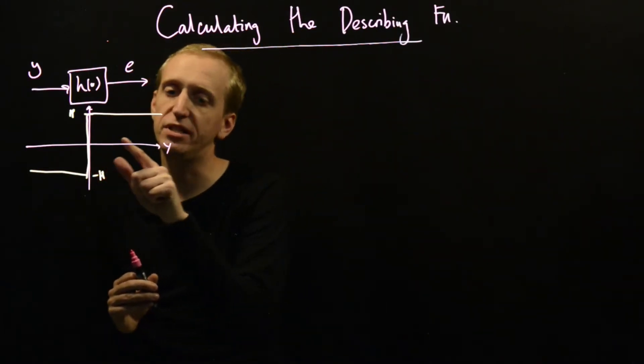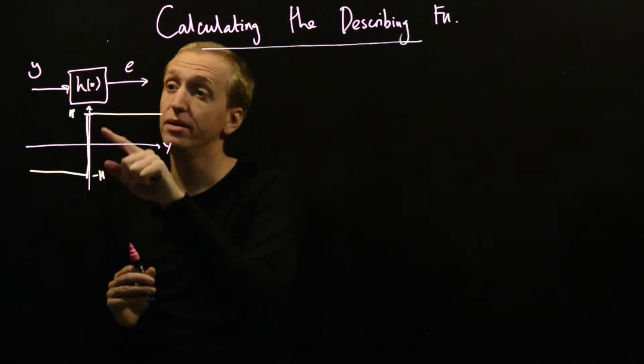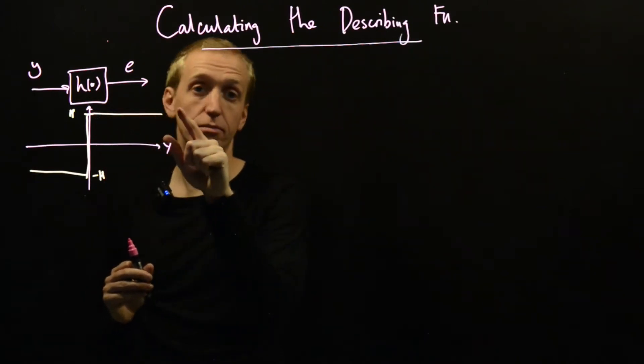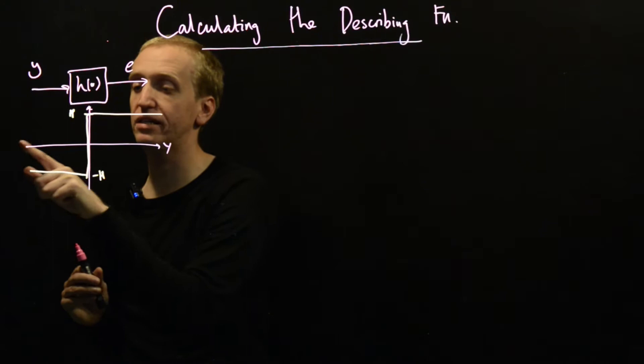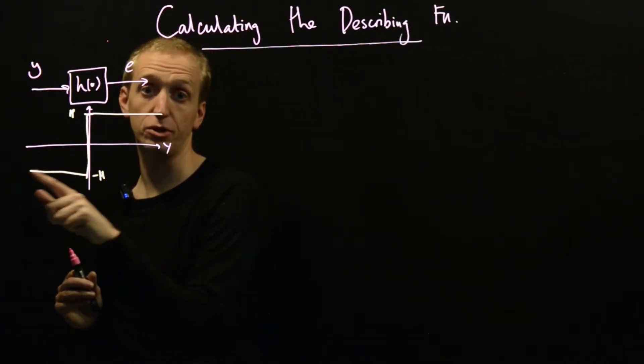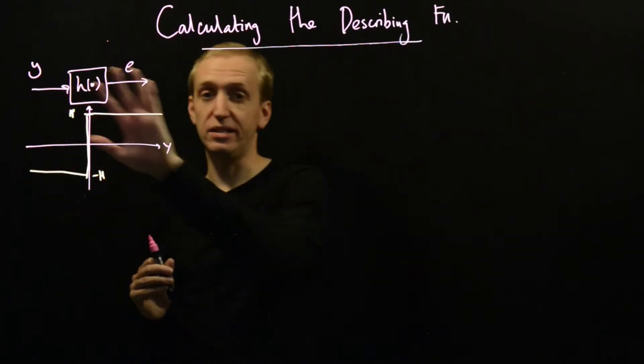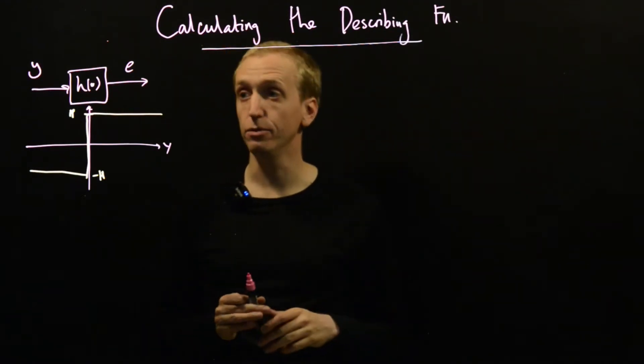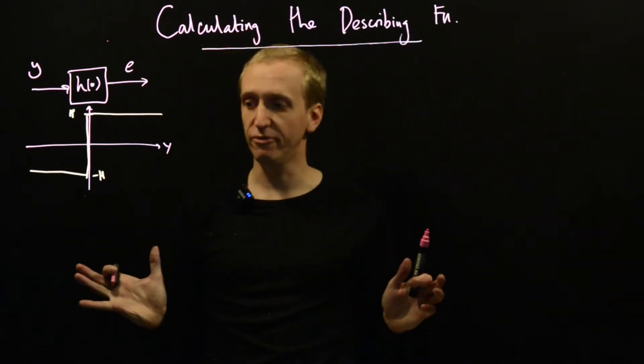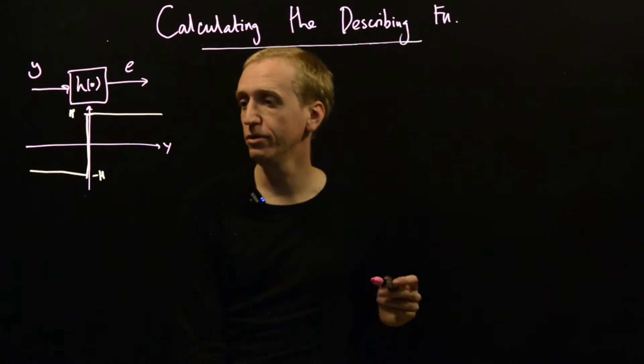And let's just quickly understand what it does. Well, if we put in positive values of y, the output is just equal to plus h, whereas if we put in negative values of y, the output is just equal to minus h. So this is the static nonlinearity that we want to look at and we want to find its describing function.